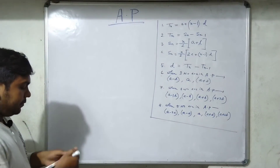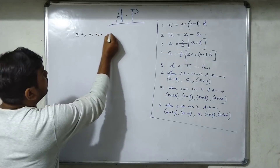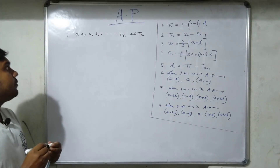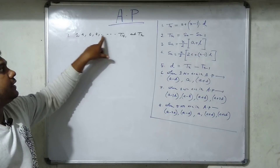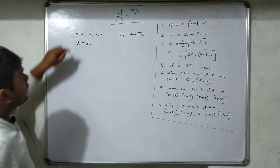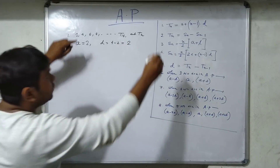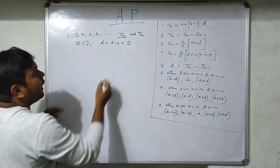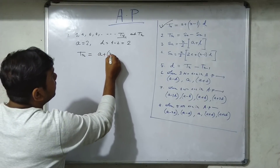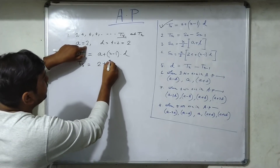For example, given the series 2, 4, 6, 8 — find T15 and Tₙ. The first term A equals 2, the common difference D equals second term minus first term: 4 minus 2 equals 2. We use the formula Tₙ = A + (N - 1) × D.